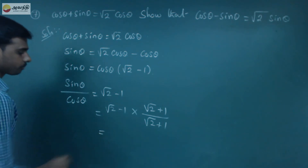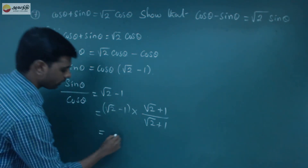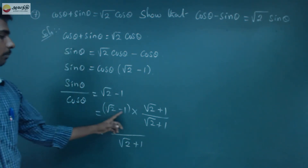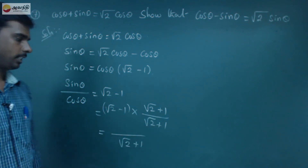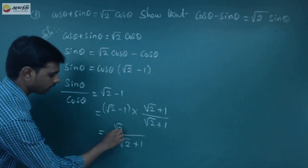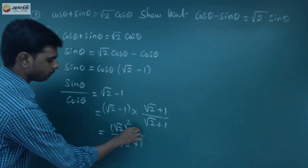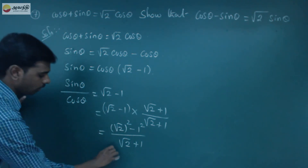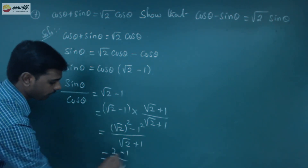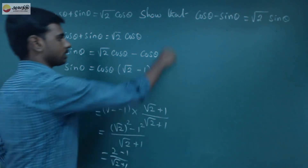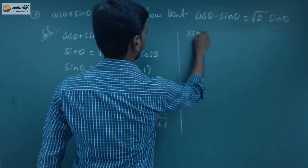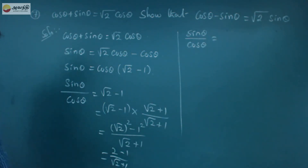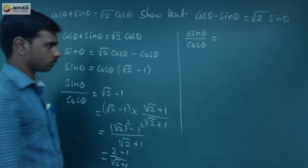So that is equal to: in the denominator, using the identity (a minus b)(a plus b) equals a squared minus b squared, we get root 2 squared minus 1 squared, which is 2 minus 1 equals 1, divided by root 2 plus 1. So sinθ by cosθ equals 1 divided by root 2 plus 1.